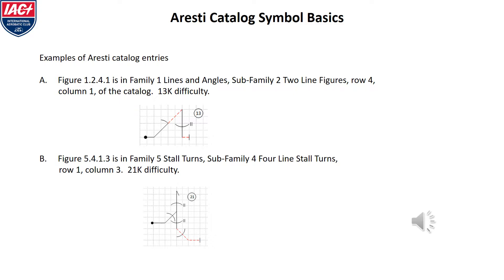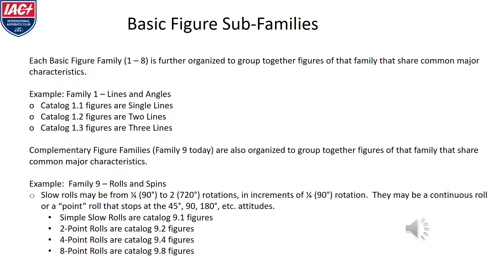Each figure has a K-factor that describes how difficult it is. Each basic figure family is further organized to group together figures of that family that share common major characteristics. Using family 1 as an example: in catalog section 1.1, the figures have one line; 1.2 figures have two lines in them; and 1.3 figures are composed with three lines.